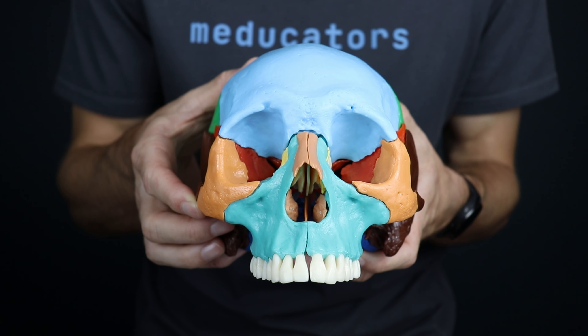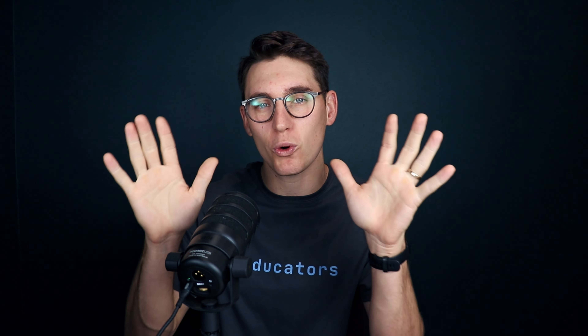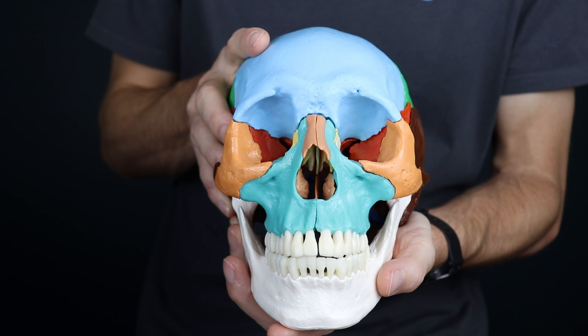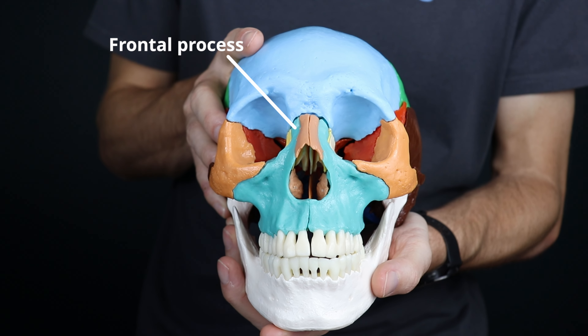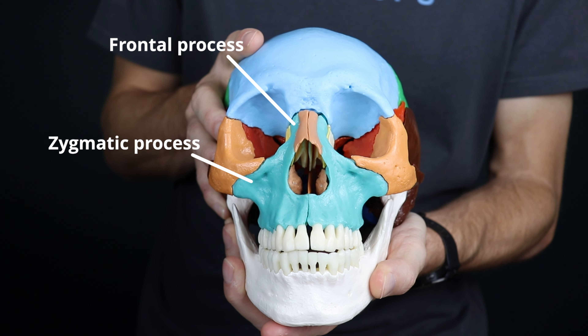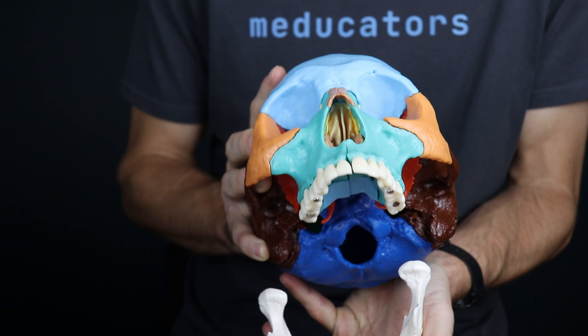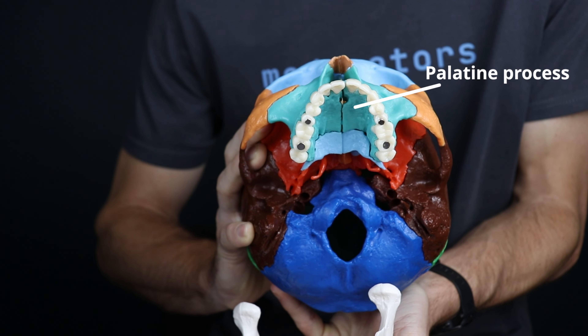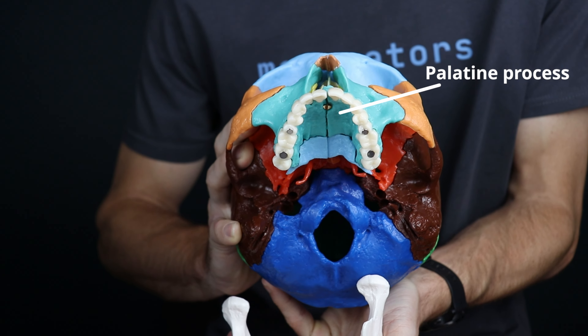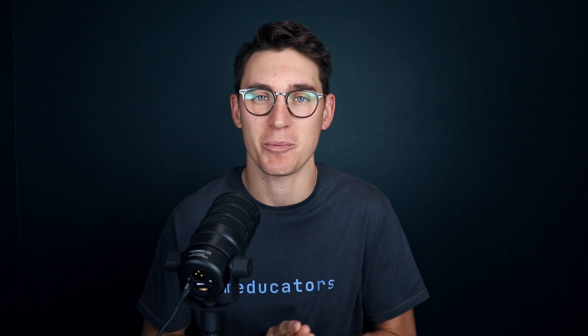The maxilla is actually two separate bones that meet at the midline at the intermaxillary suture. We can think of the maxilla as having a body and four separate processes: superiorly the frontal processes, laterally zygomatic processes, inferiorly the alveolar process, and the palatine process that extends posteriorly, which makes up the majority of the hard palate. Let's look at our CT scan to find the body and those processes.